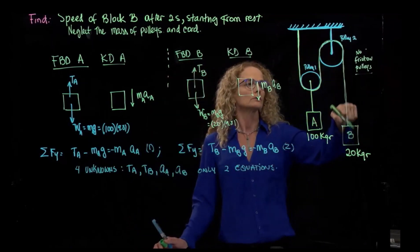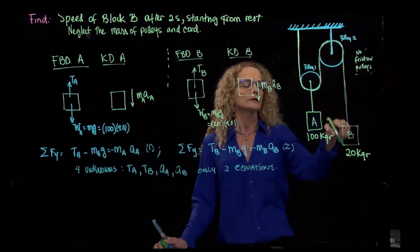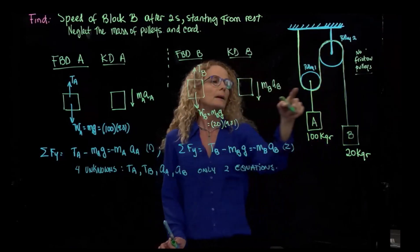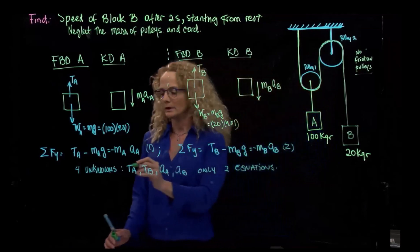So since we don't have friction, all this tension is equal. So all this tension of this chord is what I call TB. But this tension is different. So let me do the free body diagram.